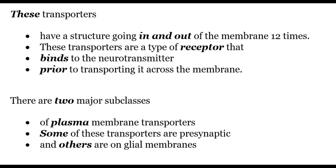There are two major subclasses of plasma membrane transporters. Some of these transporters are presynaptic and others are on glial membranes.